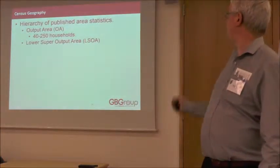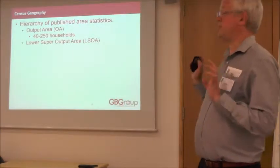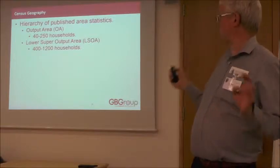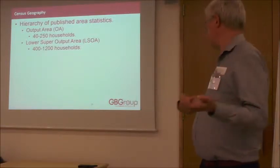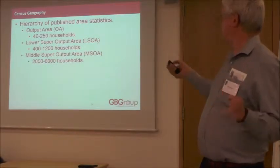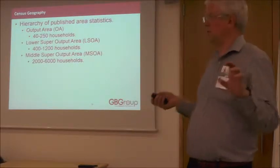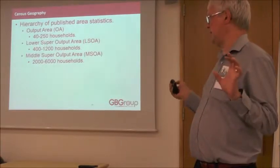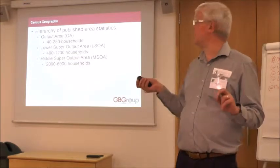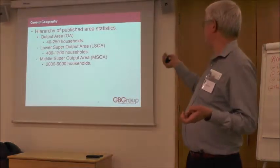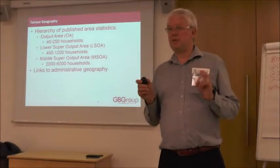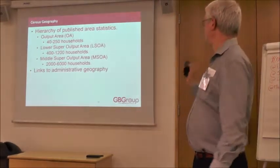A Lower Super Output Area is a larger base — an aggregate of output areas — typically 400 to 1,200 households, recommended is 600. Then you've got the Middle Super Output Area, which is even higher: 2,000 to 6,000 households, roughly the size of an electoral ward in a local authority, with a recommendation of about 4,000. It does link to administrative geography, but not exactly — so you need to be careful.